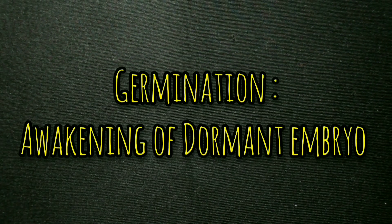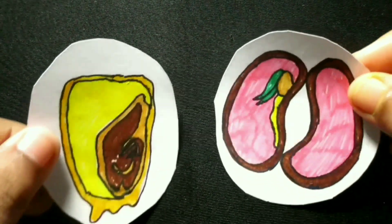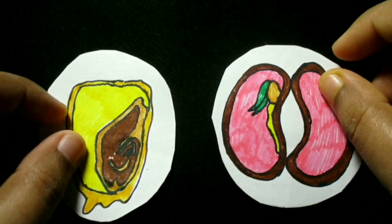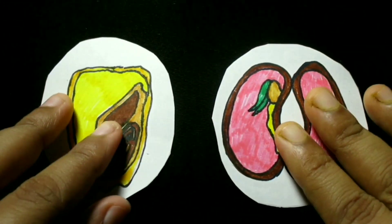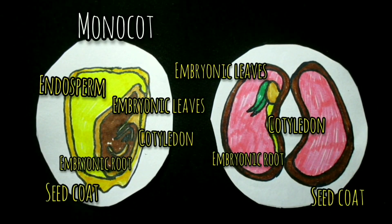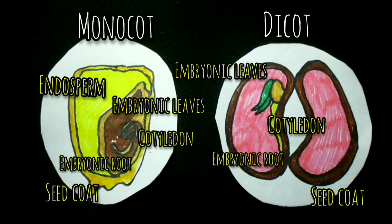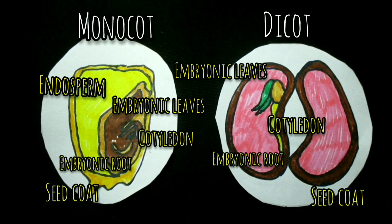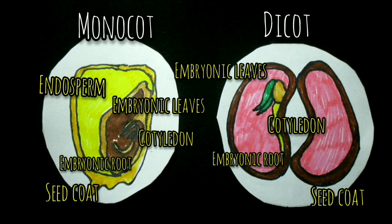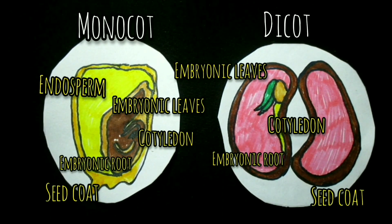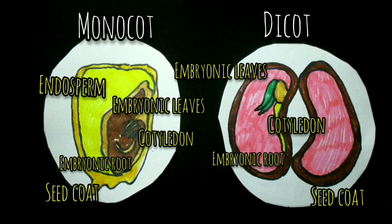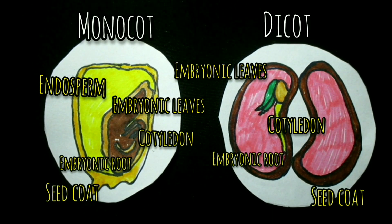Germination is the awakening of a dormant embryo. In all mature angiospermous seeds, the embryo lies in a dormant state when its physiological activities come to a minimum. Even its respiration is so slow as to be detectable only by a few sensitive instruments. As soon as the necessary conditions are satisfied, this dormancy is broken and the phenomenon of germination begins.